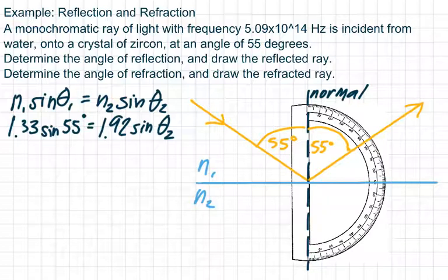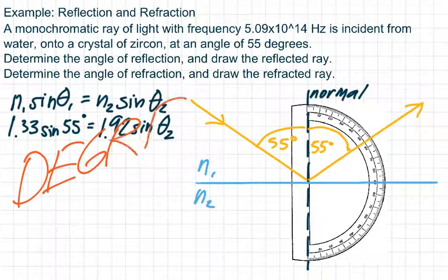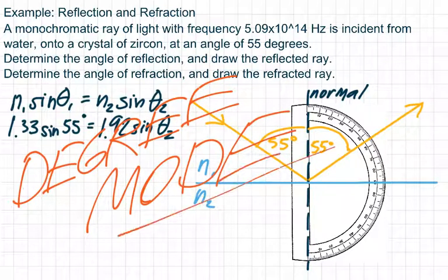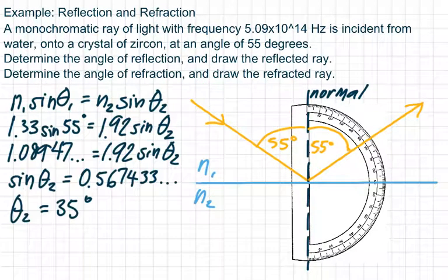One big deal with working with trig functions - sine, cosine, and tangent - is you want to be in degree mode. That's important, because if you're not in degree mode, then you're in radian mode and it's going to give you the wrong answer. So run the math through: 1.33 times the sine of 55 degrees is 1.08947. Divide both sides by 1.92, then you get that sine of theta2 is 0.567433.